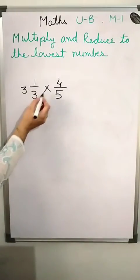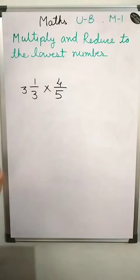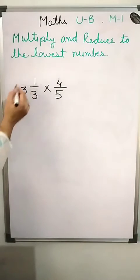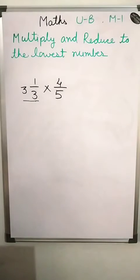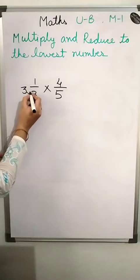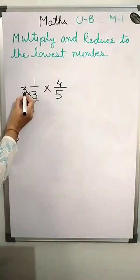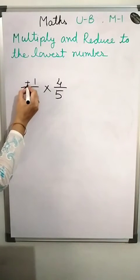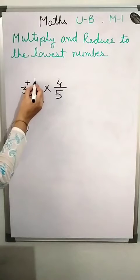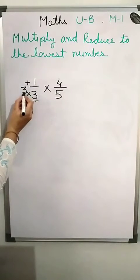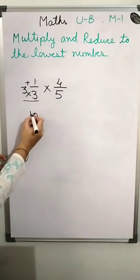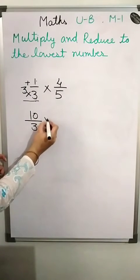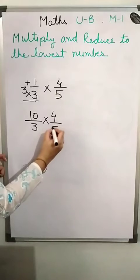Next question: 3 and 1/3 multiplied by 4/5. First convert the mixed fraction to an improper fraction. Multiply: 3 into 3 is 9, then add 1 — so 9 plus 1 is 10. The improper fraction is 10/3, multiplied by 4/5.